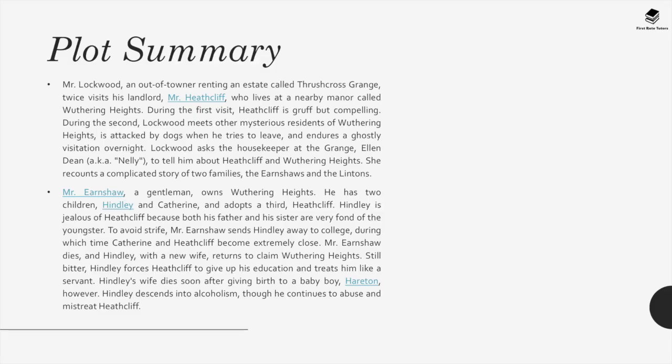With the plot summary: Mr. Lockwood, an out-of-towner renting an estate called Thrushcross Grange, twice visits his landlord Mr. Heathcliff who lives at a nearby manor called Wuthering Heights. During the first visit Heathcliff is gruff but compelling. During the second, Lockwood meets other mysterious residents, is attacked by dogs, and endures a costly overnight stay. Lockwood asks the housekeeper Nelly Dean to tell him about Heathcliff and Wuthering Heights, and she recounts a complicated story of two families, the Earnshaws and the Lintons.